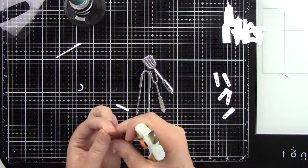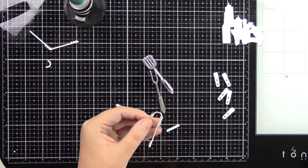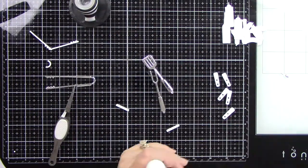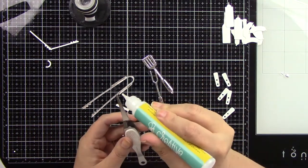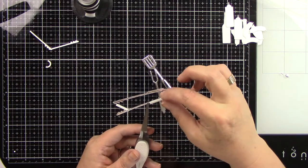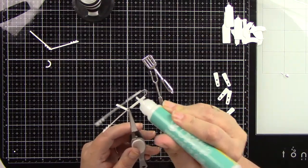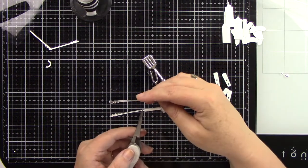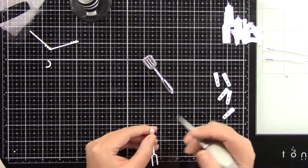For the barbecue tongs I die cut those from white and silver. I trimmed out the little handle pieces from the white cardstock and I'm going to glue that to my silver piece. I'm using liquid glue and holding that with tweezers, adding those little white handles in place.